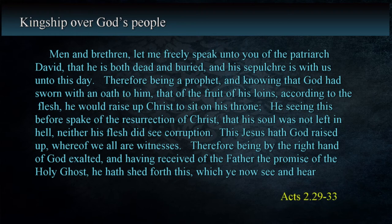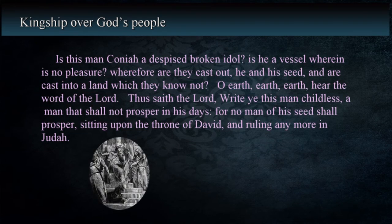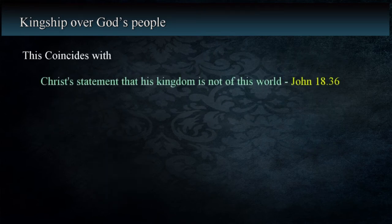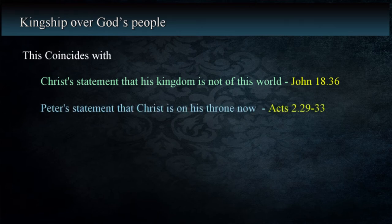We also have a statement by the prophet Jeremiah that there wouldn't be a king on the throne in a physical sense, as he writes about Jeconiah, or Coniah as he is also known: 'Is this man Coniah a despised, broken idol? Is he a vessel wherein is no pleasure? Wherefore are they cast out, he and his seed, and are cast into a land which they know not? O earth, earth, earth, hear the word of the Lord. Thus saith the Lord, write ye this man childless, a man that shall not prosper in his days, for no man of his seed shall prosper, sitting upon the throne of David and ruling any more in Judah' — Jeremiah 22:28-30. This coincides with Jesus' statement to Pilate that his kingdom was not of this world, and from what Peter stated on the day of Pentecost, we can determine that Christ is on his throne now and will remain there forever.